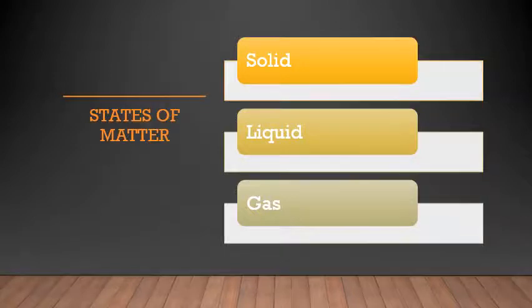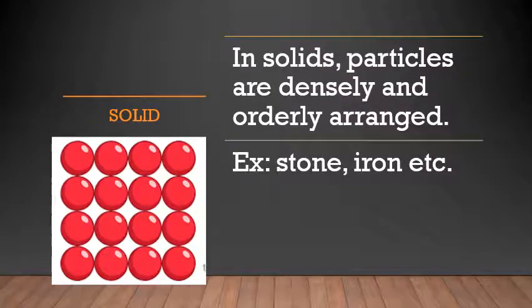What happens in solids? In solids, particles are densely and orderly arranged. The red color objects that you can see on your screen are like the molecules. In solids, particles are densely and orderly arranged. Example: stone, iron, bed, your clothes.